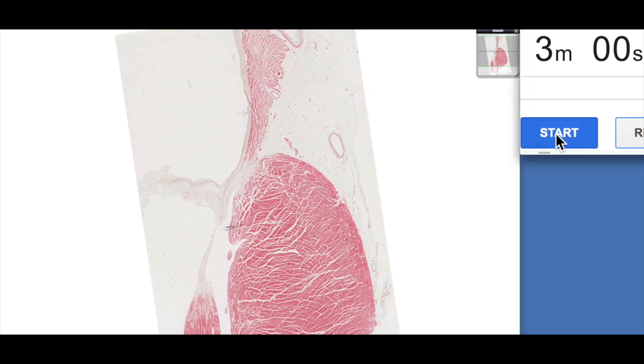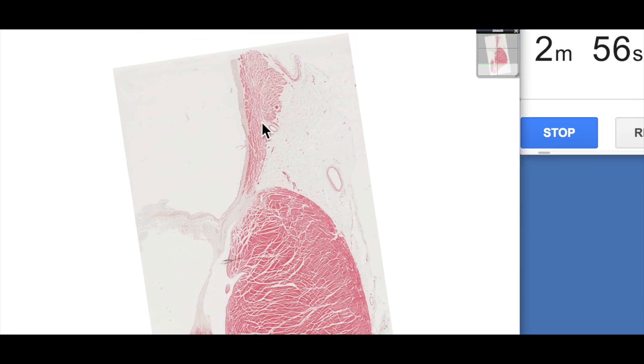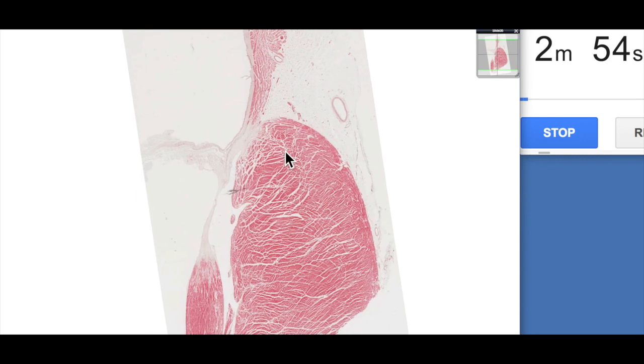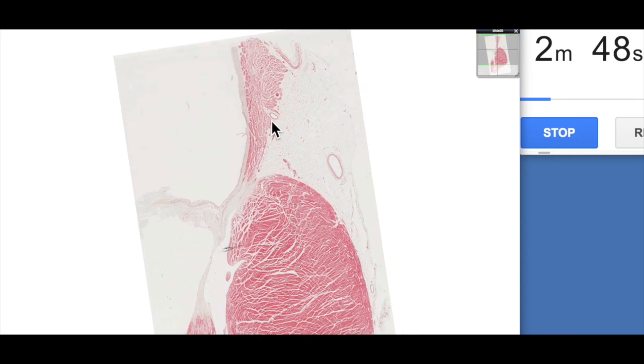So let's start our timer. Okay, so as I mentioned this is a junction between the atrium superiorly and then the ventricle inferiorly and you can certainly see one of the major differences between the atrium and the ventricles of course that's the size of the chamber.